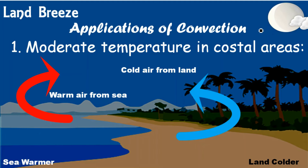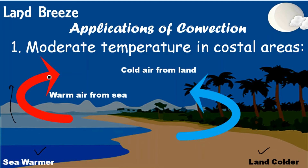During the night, there is no sun. The hot particles that moved toward the sea during the day make the sea warmer by night. The land becomes cooler because its hotter particles have moved up and toward the sea. Now the warmer, lighter sea particles move upward and toward the lower temperature of the land, forming a convection current again.